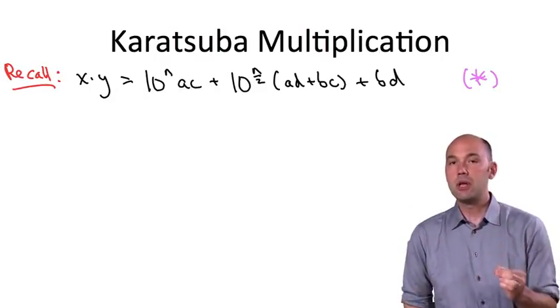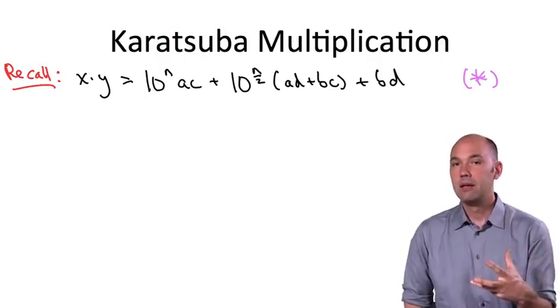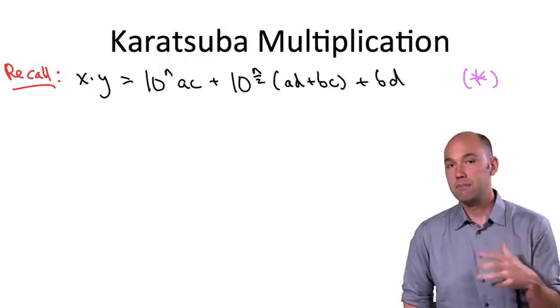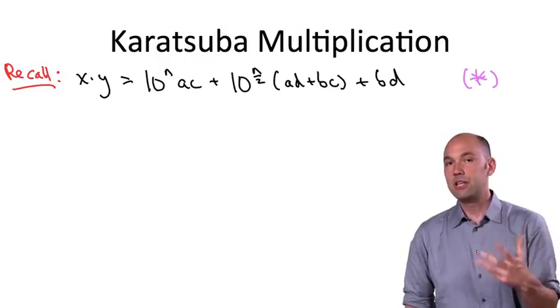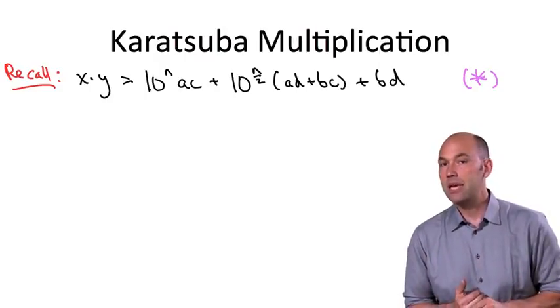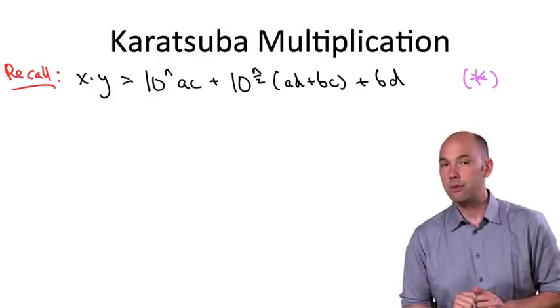But if you think about it, there's really only three quantities in star that we care about. The three relevant coefficients. We care about the numbers a, d, and b, c, not per se, but only in as much as we care about their sum, a, d, plus b, c. So this motivates the question, if there's only three quantities that we care about, can we get away with only three, rather than four, recursive calls?